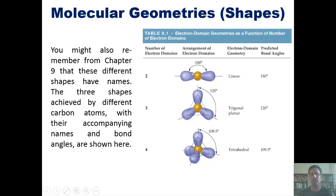The three shapes achieved by different carbon atoms with their accompanying names and bond angles are shown here. This is linear, that is, carbon atoms that have a 180-degree angle between them. Trigonal planar, that's where the three groups around them have 120-degree angles. And tetrahedral, where there are four groups around a central carbon atom, each having a 109.5-degree bond angle between them, give or take a little, depending on the molecule.